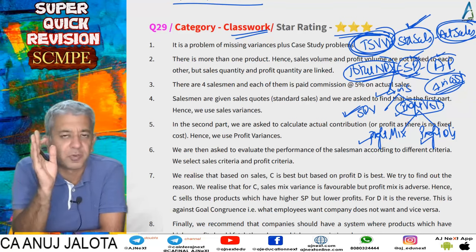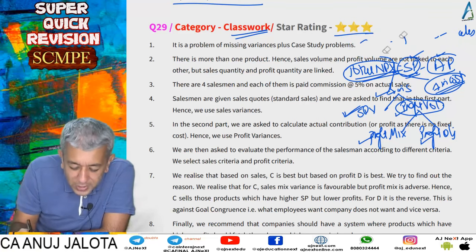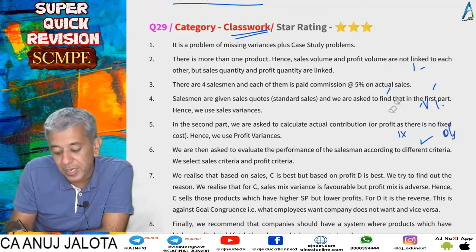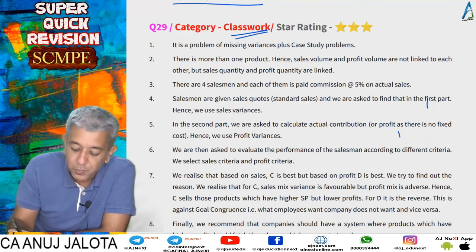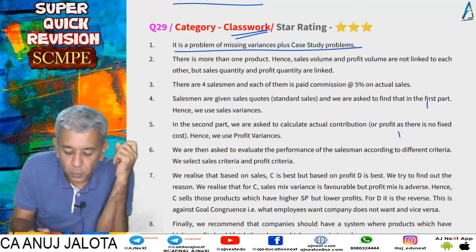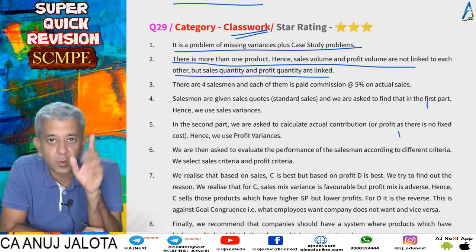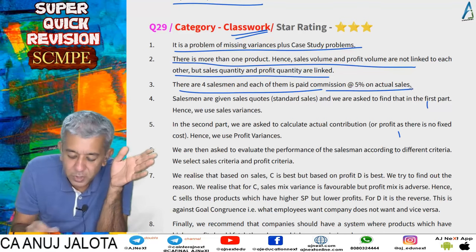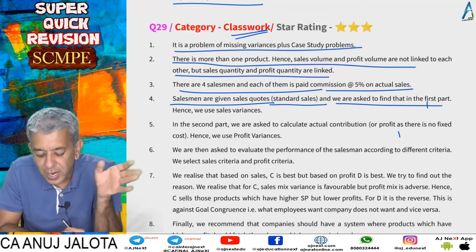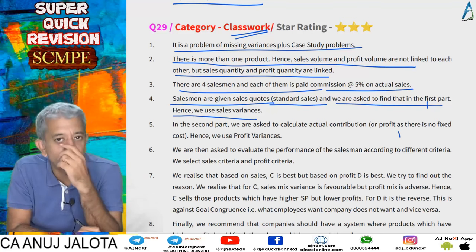With total net profit variance known and standard profit derived, actual profit for each of the four salesmen came as a balancing figure. This was the major analytical part of question 29 — a problem on missing figures plus a case study. More than one product means sales volume and profit volume are not linked, but sales quantity and profit quantity are. Each salesman is paid 5% commission on actual sales, and sales quotas are standard sales.